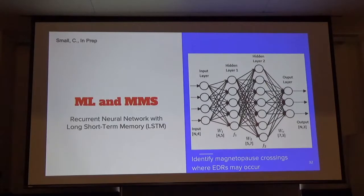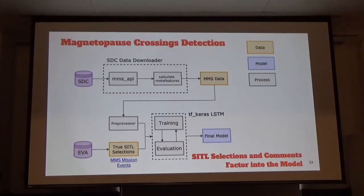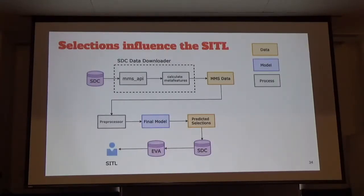The second example gets into the ground loop. Our first application is neural networks applied to the SIDL data to make predictions of the magnetopause class. We're taking data from the MMS Science Data Center, pre-processing it, and using it as training data for the model. EVA is the tool the SIDL uses to make selections — those selections are at the SDC and we can access them through the MMS mission events page. These mission events allow us to separate the data into magnetopause and non-magnetopause crossings, and we train a neural network on that to create a final model.